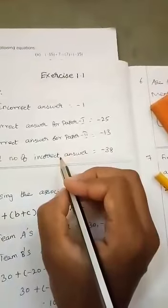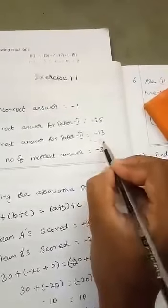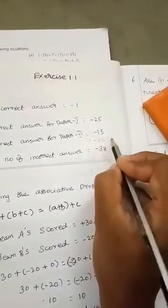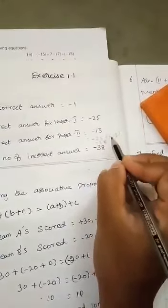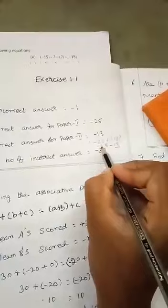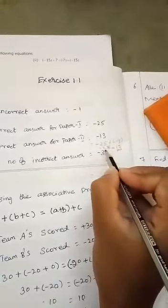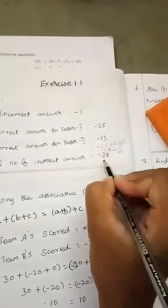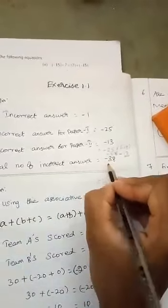They asked the total number of negative questions. We are going to adding these two numbers: minus 25 plus minus 13. Minus 25 plus into minus is minus, minus 13. The sign is same, so we are going to adding these numbers. 25 plus 13 is 38. The sign is minus. Totally 38 questions is incorrect.